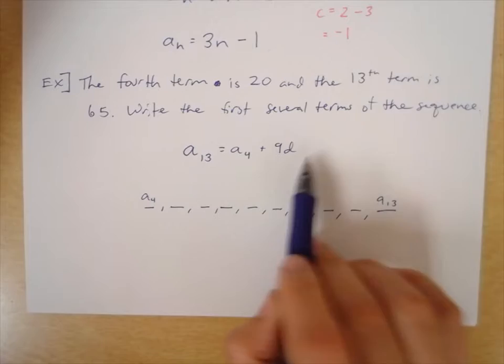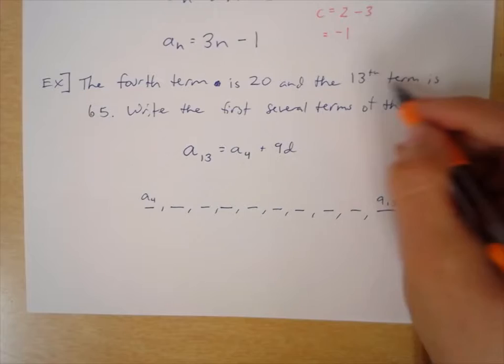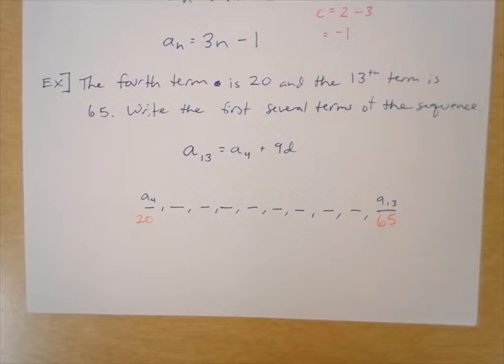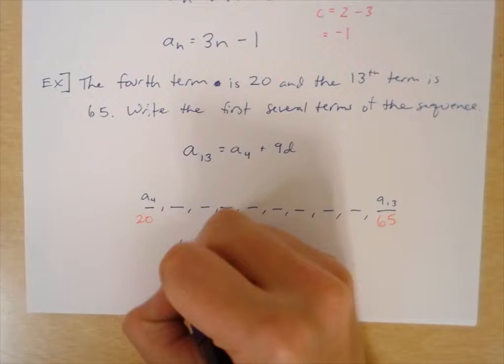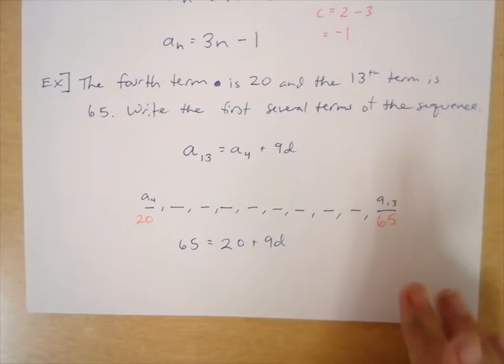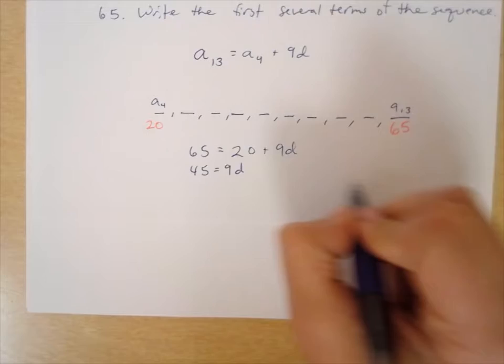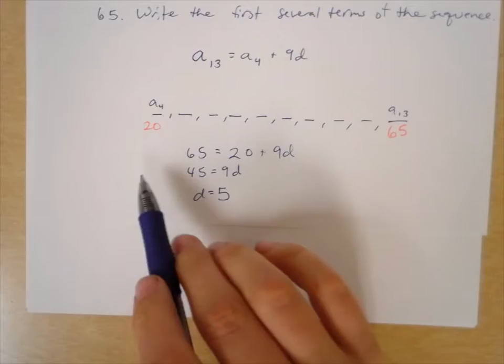We fill in the known values: a sub 13 is 65, and a sub 4 is 20. So 65 equals 20 plus 9 times the difference. Subtracting 20 from both sides gives 45 equals 9 times the difference. Dividing by 9 gives d equals 5. Now we know the difference.